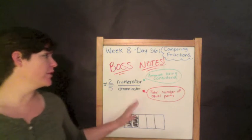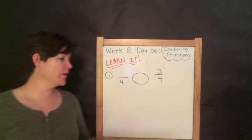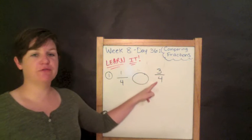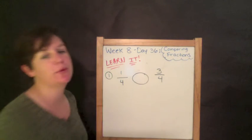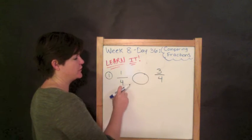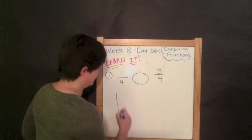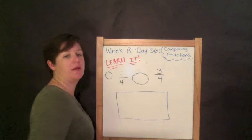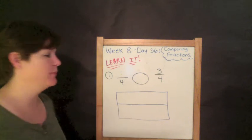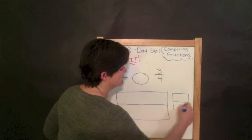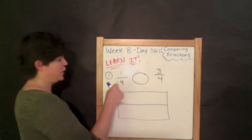Boss notes today show you how to model a fraction, and now we're going to get into how you compare them. Here is example one — we are comparing one fourth and three fourths. Since we are comparing two different fractions, I'm going to draw a bigger rectangle and split it horizontally, so I can put one fraction on top and one fraction on the bottom. I suggest not drawing it crookedly — just make it one big rectangle and then split it in half.